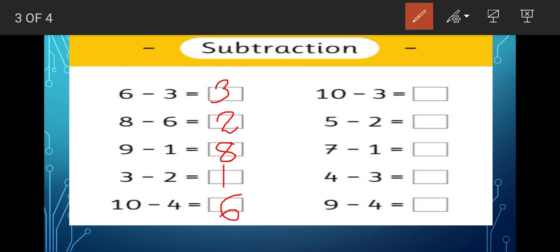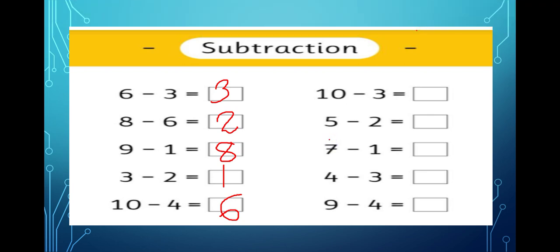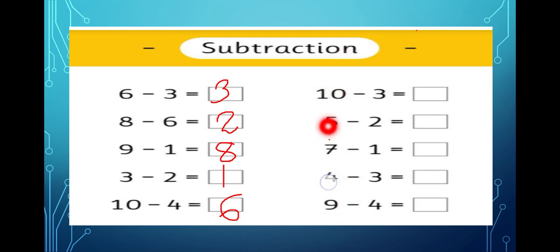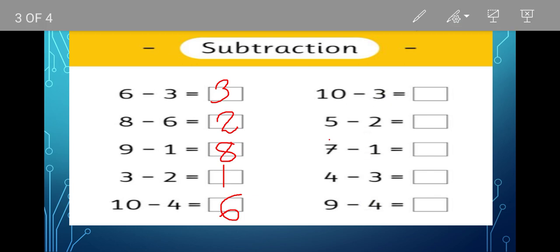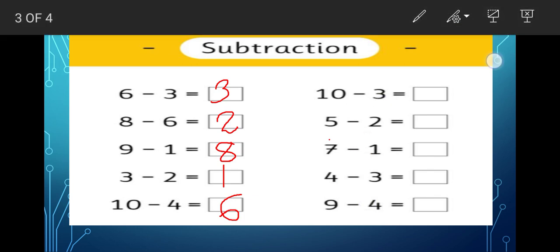The first row I have done. Now you will do this row in your copy by yourself. Look at these numbers: ten minus three, five minus two, seven minus one, four minus three, and nine minus four. These five sums you will do in the copy — write the heading as homework and do it in your copy.